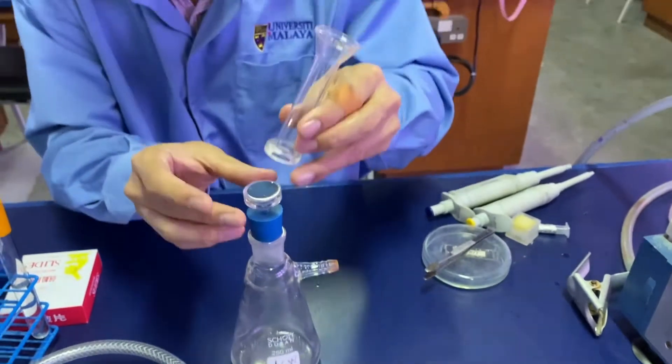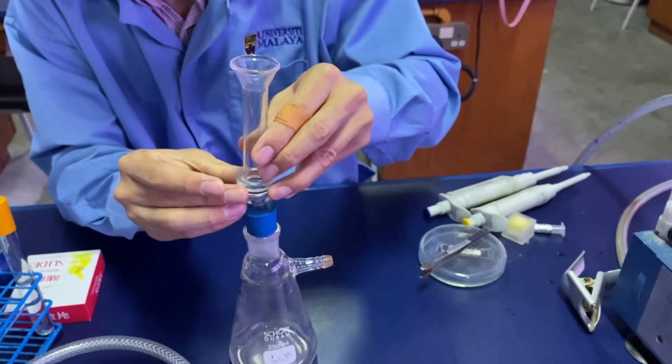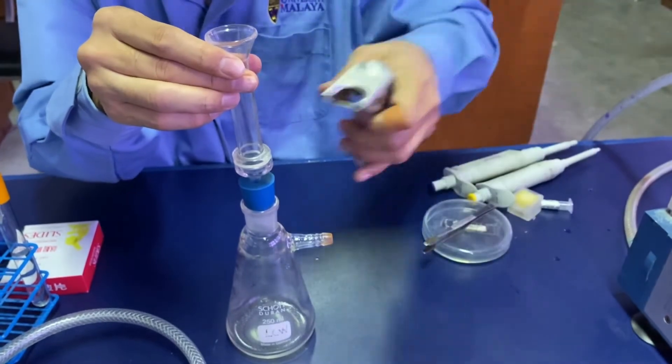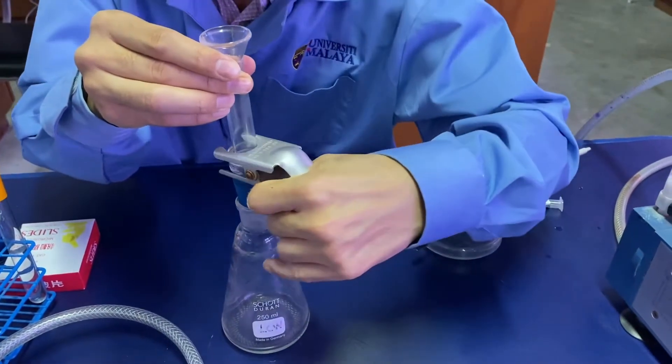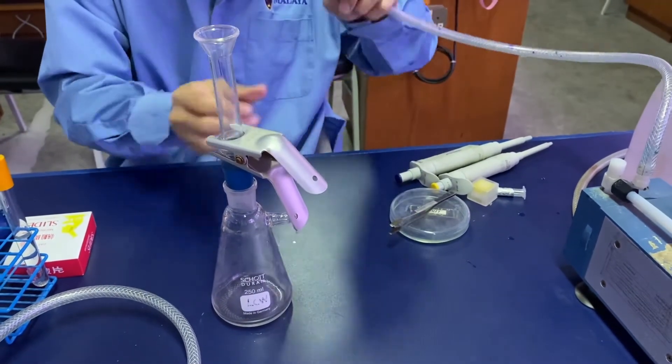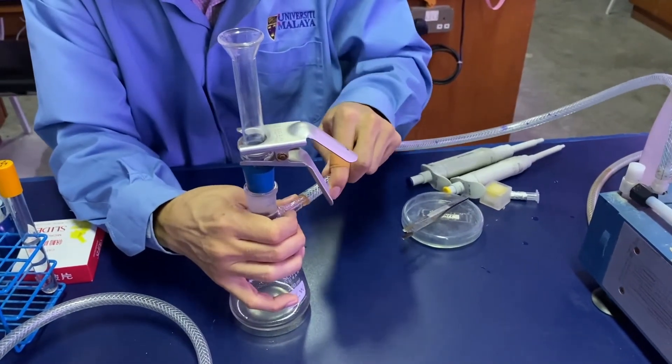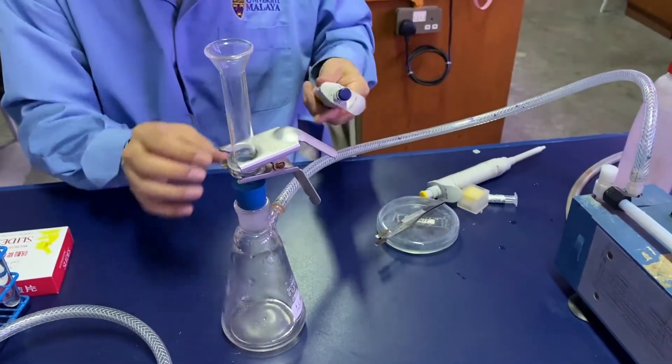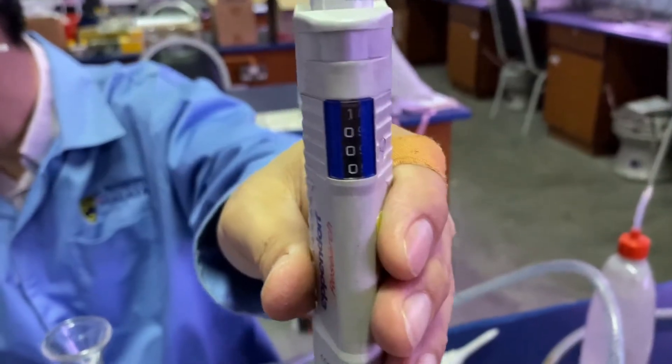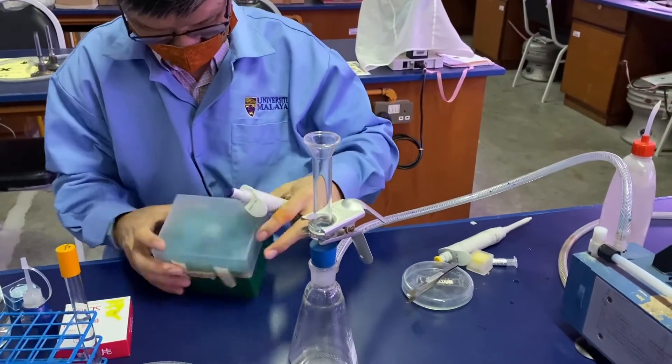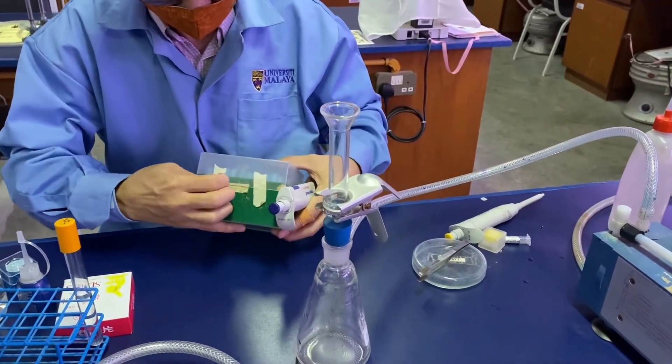Next we will place the filter funnel gently on top of the membrane filter before clamping it to ensure it is stable. Gently attach the tubing to the vacuum pump. The blue micropipette is set at 1000 microliters because we will be using two milliliters of sample.